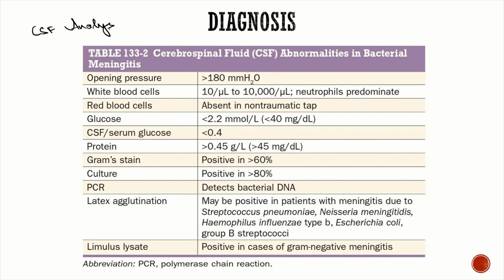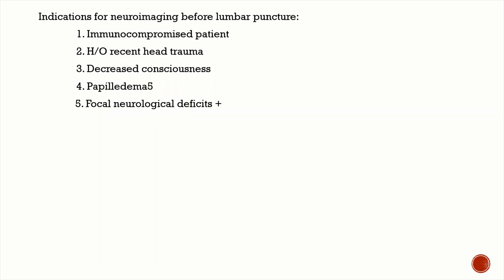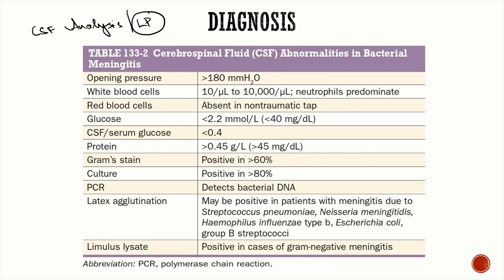You do not need to routinely perform neuroimaging before lumbar puncture, but indications for CT or MRI brain first include: immunocompromised status, history of recent head trauma, decreased consciousness, papilledema (signs of raised ICP), and focal neurological deficits.